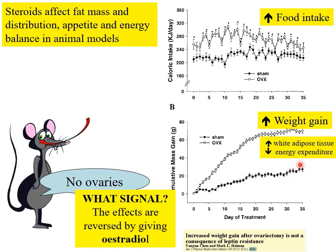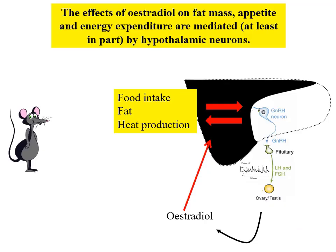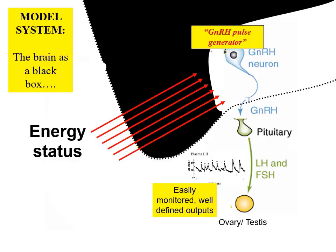Where is that oestradiol acting? At least part of it is working in the brain, controlling appetite — reducing food intake. The reduced food intake is then responsible for the reduction in weight gain. For the rest of this lecture, we're going to look at how energy status and steroids interact with each other in controlling this whole system.